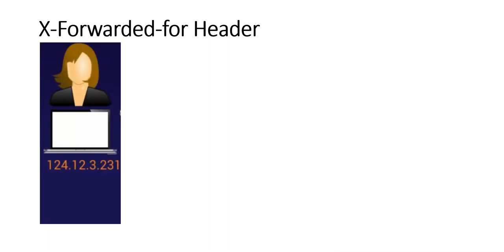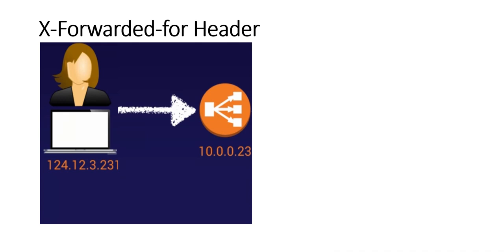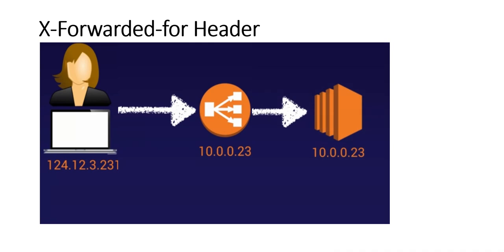Next we will check the X-Forwarded-For header. Our user browses from a public IP address — let's assume it's 124.12.3.231 — and they hit the ELB. The ELB has an internal IP address of 10.0.0.23, and this is passed to the EC2 instance. The EC2 instance ends up logging the load balancer's internal IP as the user's IP address. You can still get the user's real public IP address through the X-Forwarded-For header.